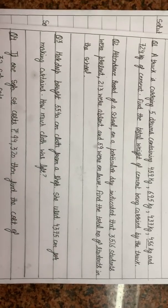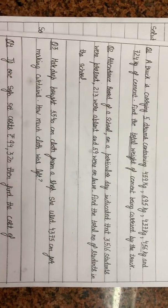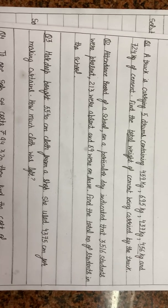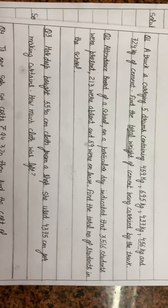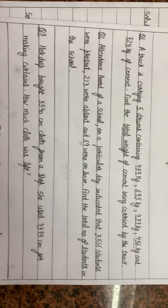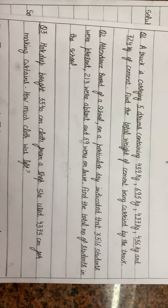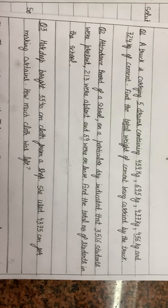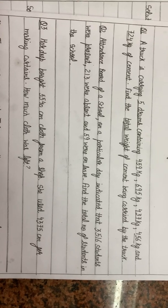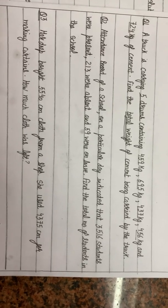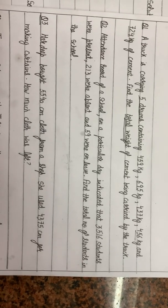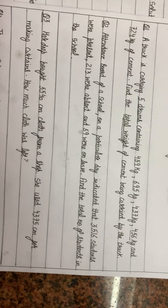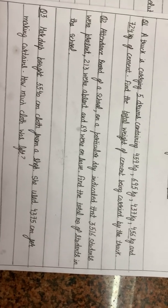Now let's have a look at question number 2. Question number 2 says: the attendance board of a school on a particular day indicated that 3516 students were present, 213 students were absent, and 59 were on leave. Find the total number of students in the school.